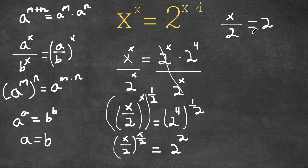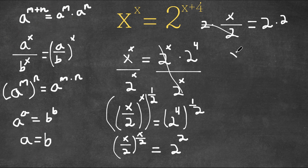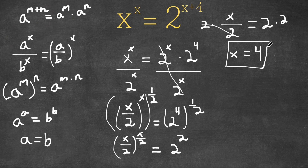Now, as you can see, we have a simple equation. We simply multiply both sides by 2. These two get canceled out and we would have x is equal to 4. So 4 is our answer.